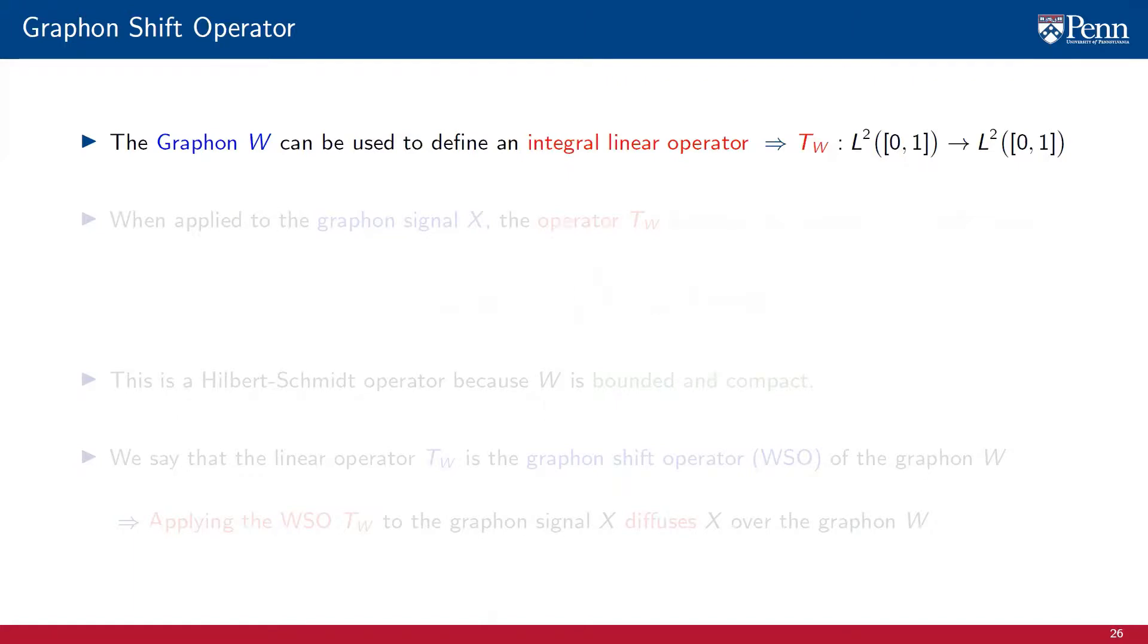The fundamental operation performed in graph signals is a multiplication with the shift operator. The analogous of that in graphon signals is the application of the integral linear operator T_W associated with the graphon W. This linear operator is a functional that maps graphon signals to graphon signals. When applied to the graphon signal X, the operator T_W produces the signal T_W X whose value at v equals the integral from 0 to 1 of the product between the graphon W(u, v) and the graphon signal X(u).